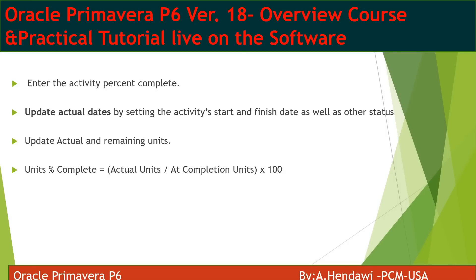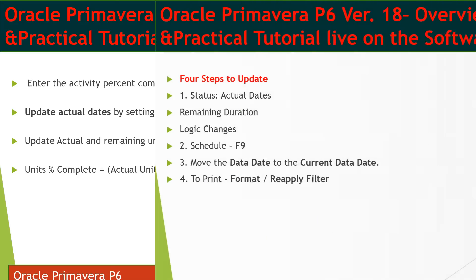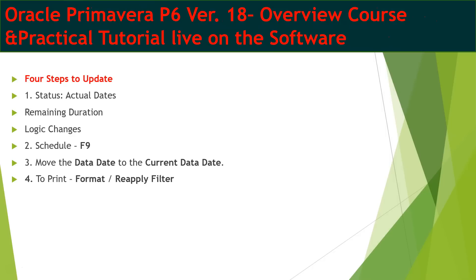You have to go and enter the percent complete for each activity, entering actual dates and remaining durations. The units percentage is calculated as actual units divided by at-completion units multiplied by 100. For example, if you have actual units of 20 divided by overall units of 100, your progress percentage for this activity is 20%. Once you have all the information, you go to P6, start actualizing the dates, add the remaining durations, do any logic adjustments, and press F9, which allows you to schedule the dates and run the calculations.